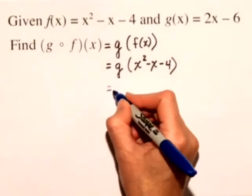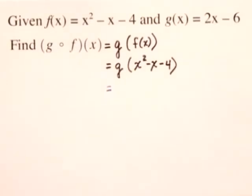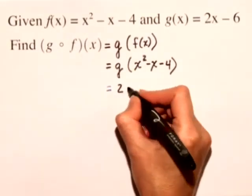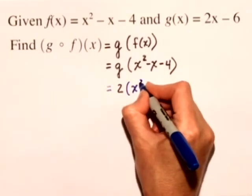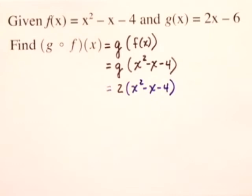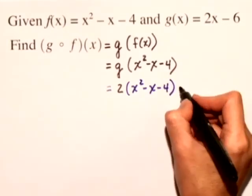So this is really equal to 2 times x, which is x squared minus x minus 4, and then we have minus 6.